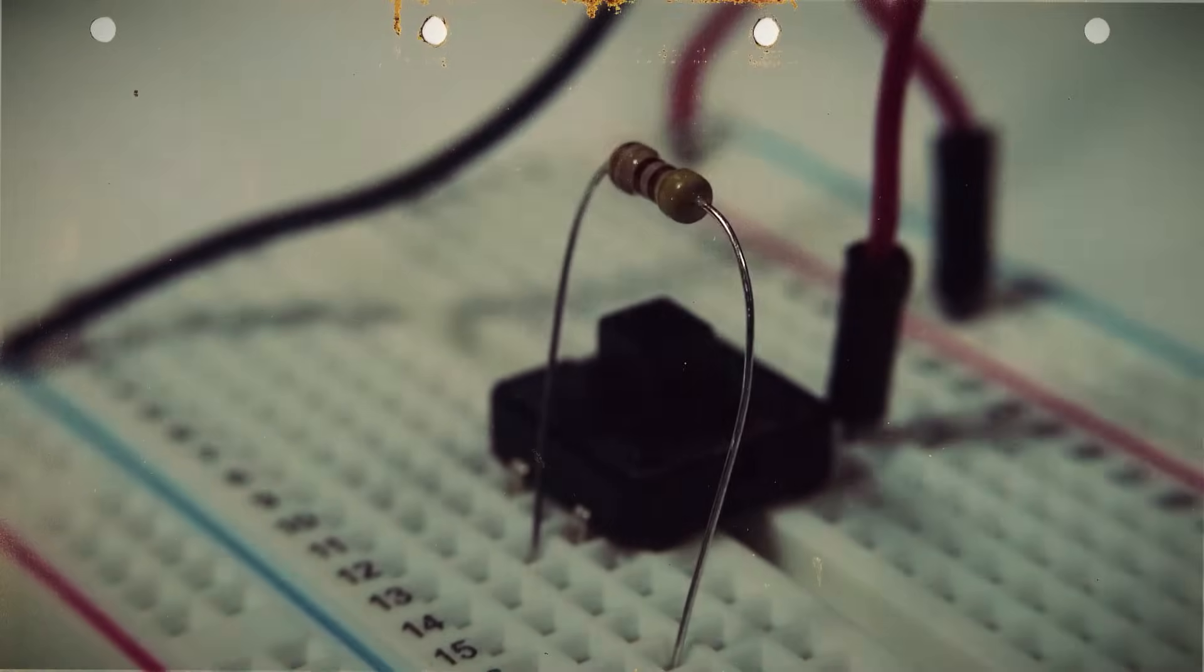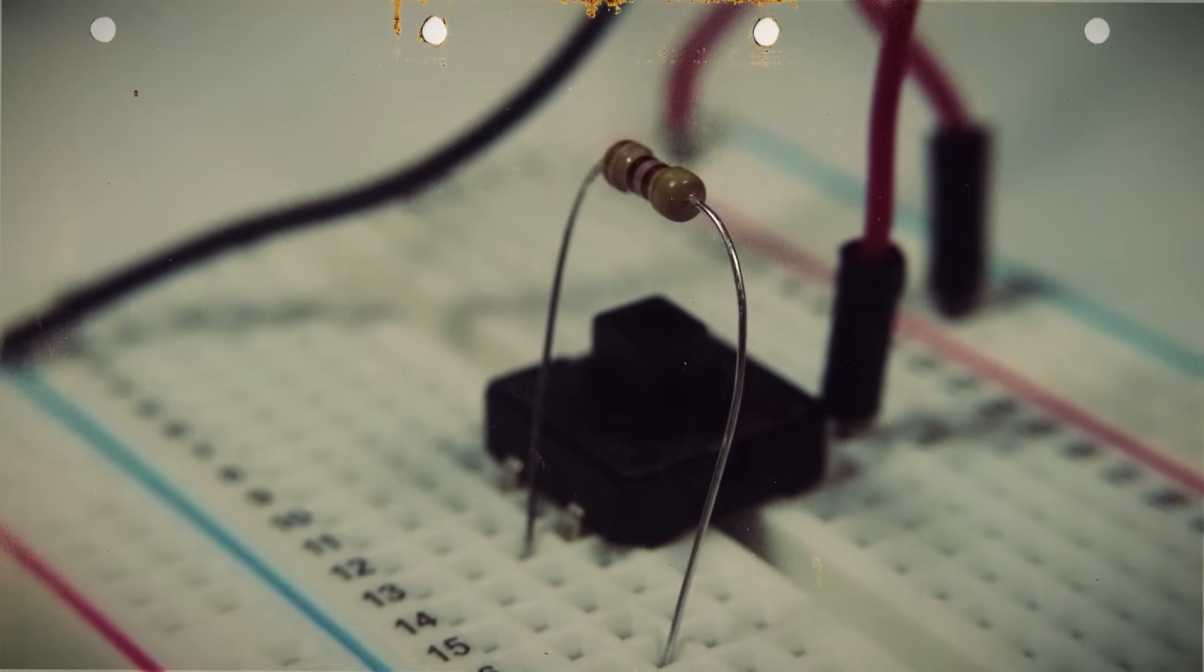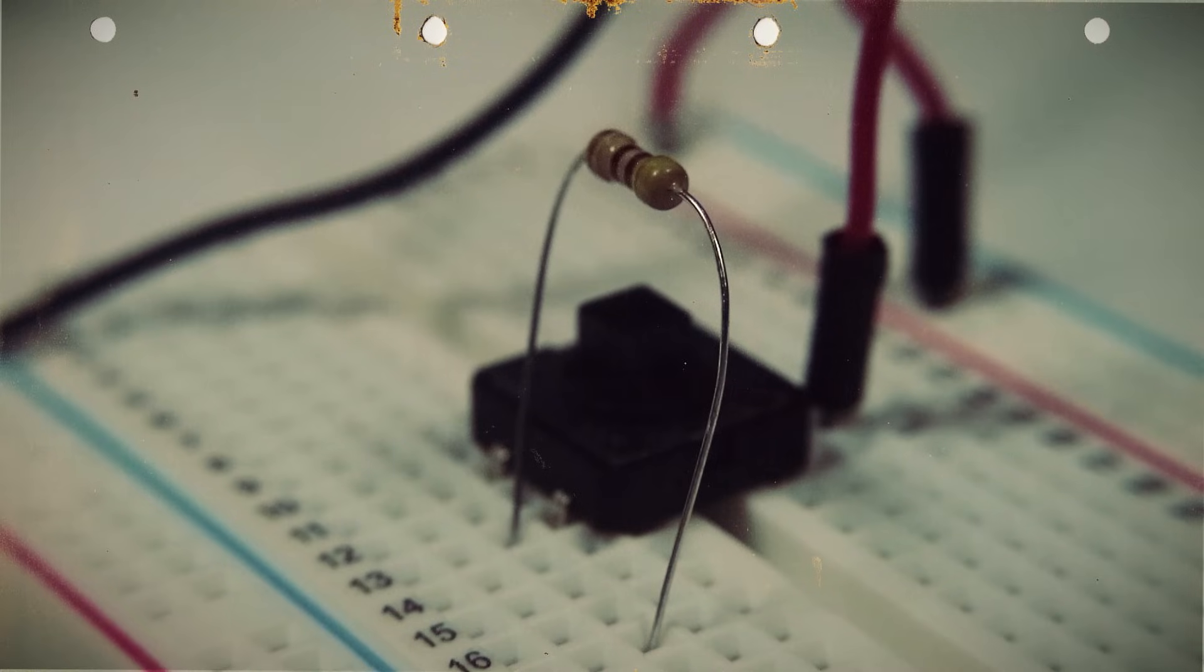On the other side of the button, we can connect our resistor to the same column as one of these button legs and connect the other end of the resistor to an empty column that's on this half of the breadboard.